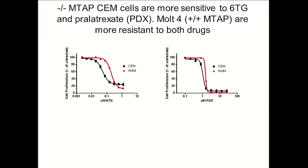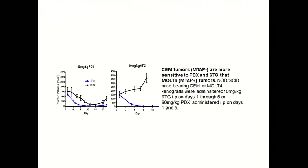What about in vivo? Our graduate student Philip Tedeschi looked at the effect of pralatrexate and 6-thioguanine in xenografts in mice. As shown in the slide, the CEM cell line is much more sensitive to pralatrexate than the MOT4 cell line — the one that has MTAP. Surprisingly, the MOT4 cell line actually grows in the presence of 6-thioguanine compared to the CEM cell line, which remains very sensitive to 6-thioguanine in vivo.